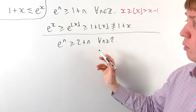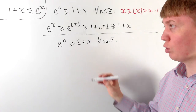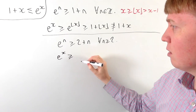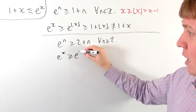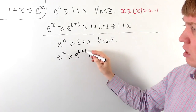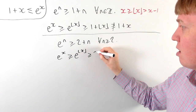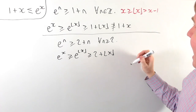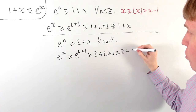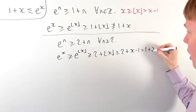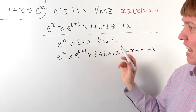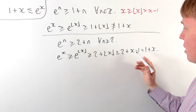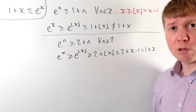Let me show how to use the floor function to finish the proof, then we'll fill in the induction details. If we can show eⁿ ≥ 2 + n for all integers n ≥ 2, then for all x ≥ 2 we can say e to the x is bigger than e to the floor function of x, which is e to an integer greater than or equal to 2. So this is greater than or equal to 2 plus the floor function of x. Since floor(x) > x minus 1, we can replace floor(x) with x minus 1, giving 2 plus x minus 1, which is 1 plus x.